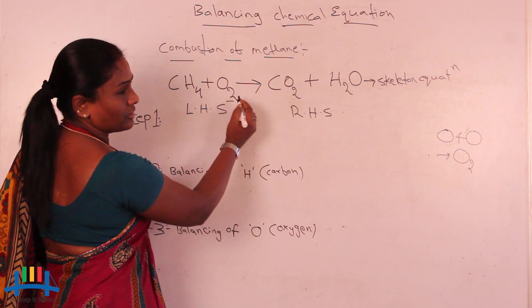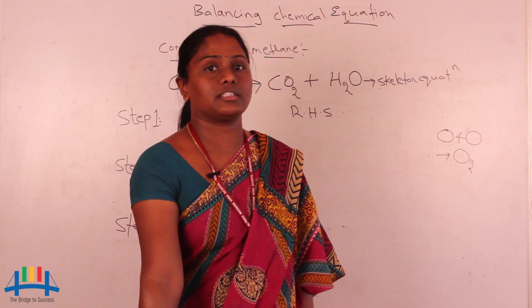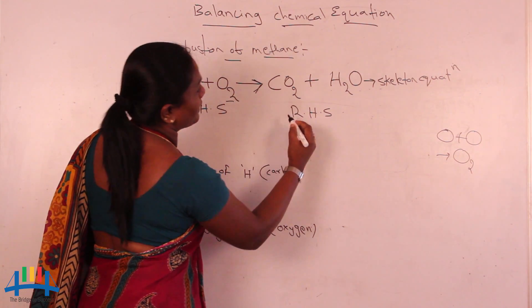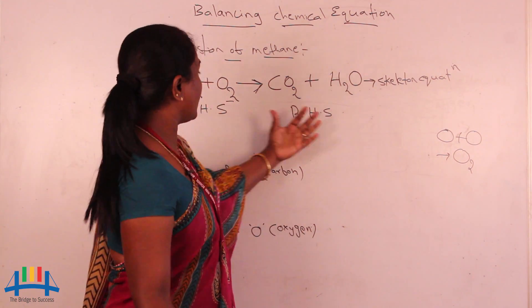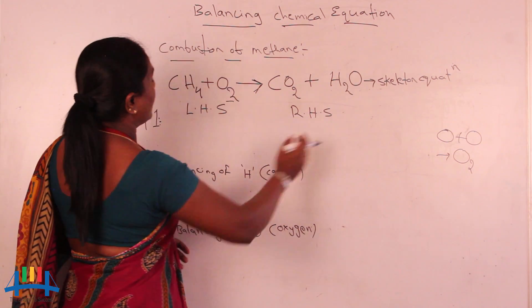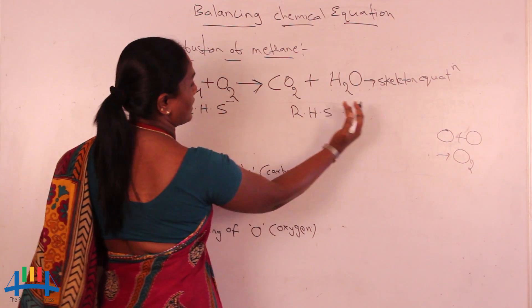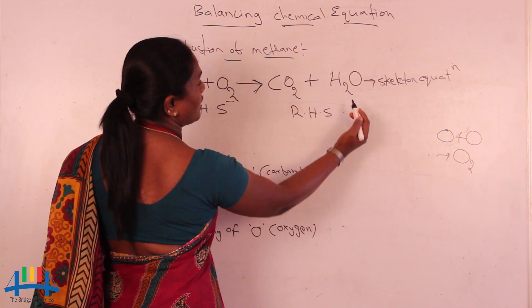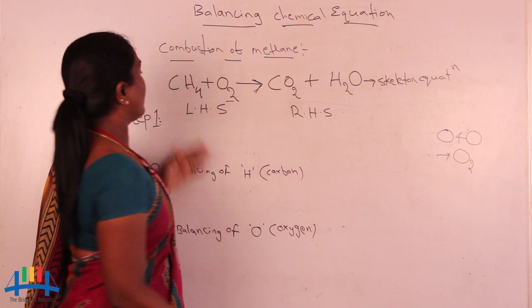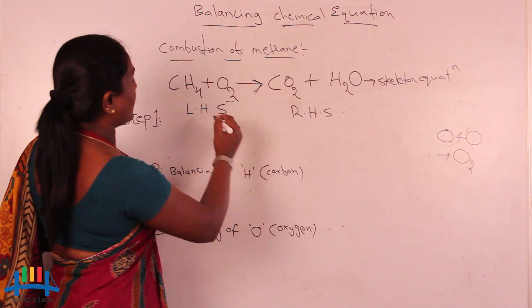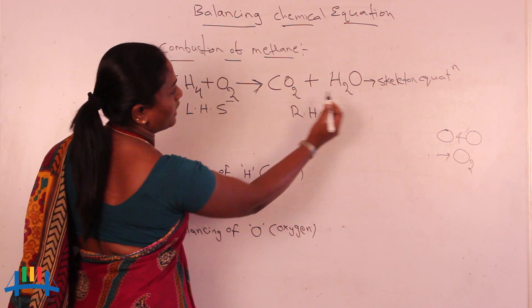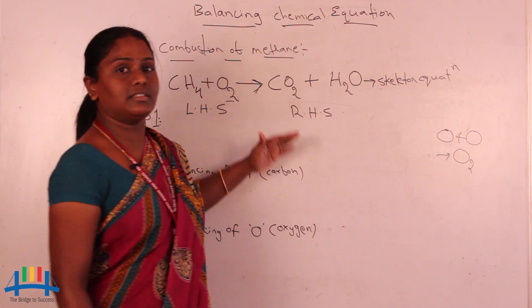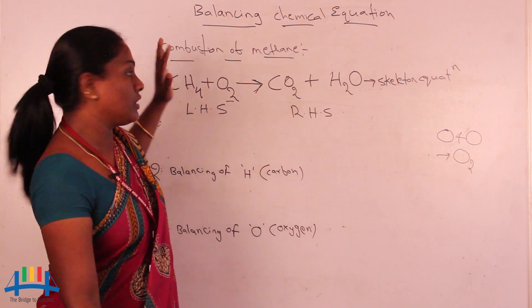Combustion means any reaction which takes place in the presence of oxygen. So methane plus oxygen gives products. The left-hand side (LHS) contains reactants and the right-hand side (RHS) contains products. The products are carbon dioxide and water molecule. After reacting in the presence of oxygen, I got carbon dioxide and water. This equation is called a skeleton equation — the equation which is not exactly balanced.